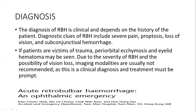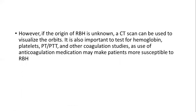The diagnosis of retrobulbar hemorrhage is clinical and depends on the history of the patient. Diagnostic clues include severe pain, proptosis, loss of vision, and subconjunctival hemorrhage. If the patient is a victim of trauma, periorbital ecchymosis and eyelid hematoma may also be seen. You should not wait for imaging as it is an emergency and a clinical diagnosis. If the cause of hemorrhage is not found, you can obtain a CT scan. You can also test hemoglobin and platelets, and check if the patient is on anticoagulation medication.